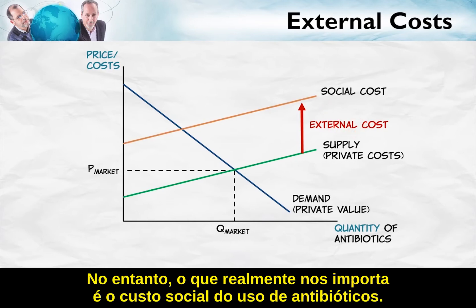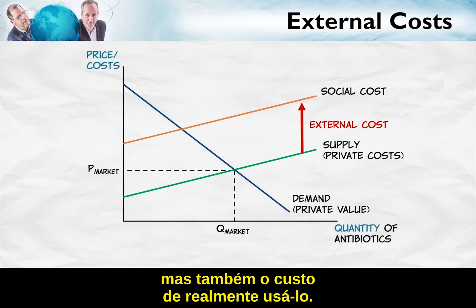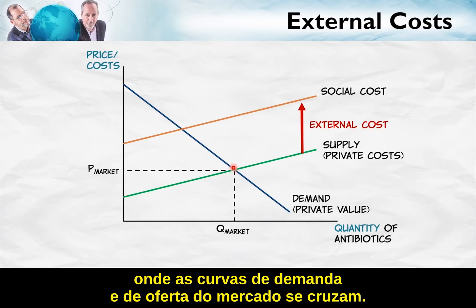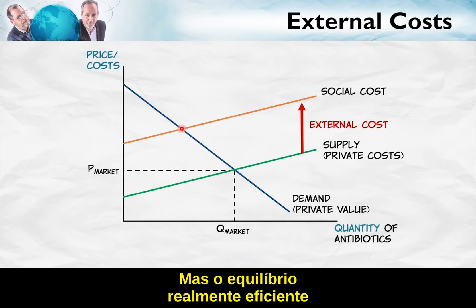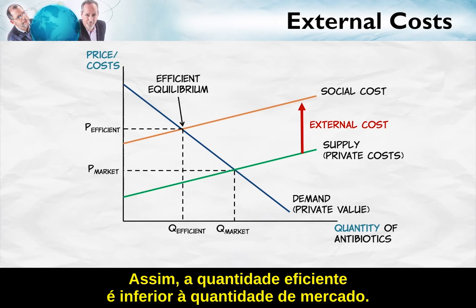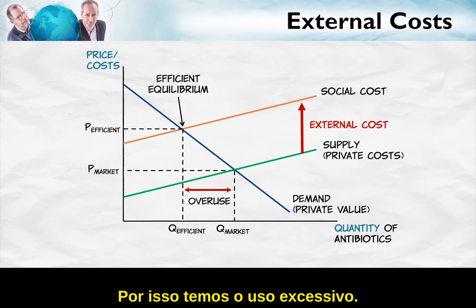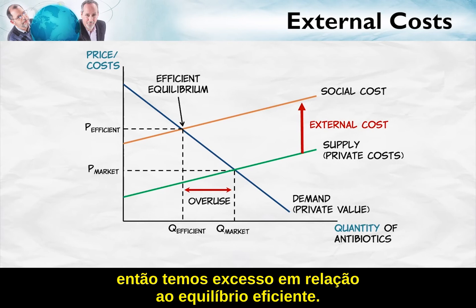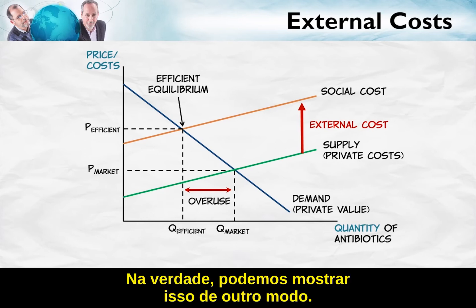What we really care about is the social cost of antibiotic use — not just the cost of producing the antibiotic, but also the cost of actually using it, including the external cost. So the market equilibrium is found where the market demand and supply curves intersect, but the true efficient equilibrium is where the demand curve intersects the social cost curve. The efficient quantity is therefore less than the market quantity — thus we have overuse, because the market doesn't take into account all of the costs of antibiotic use.